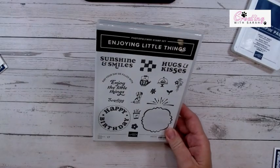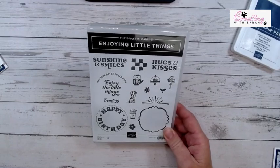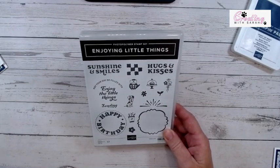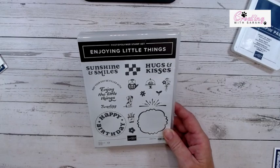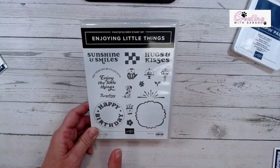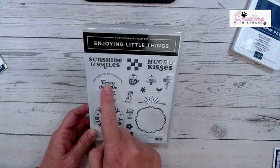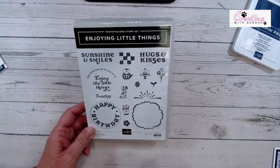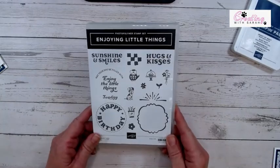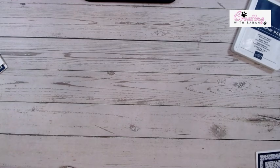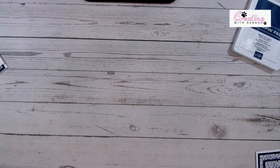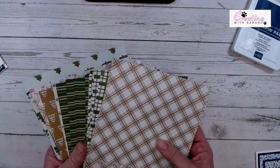So the set I chose today is called Enjoying Little Things. It's kind of hard to say because I want to say Enjoying the Little Things, but that's not the name of the set. It is in the holiday catalog, and I loved this happy birthday. I've actually used this a couple times in a card class, and I love the hugs and kisses and the sunshine and smiles. It is just a lift me up set.